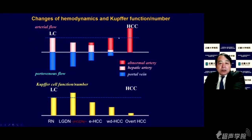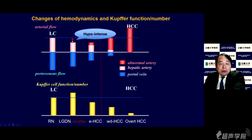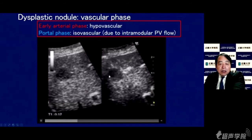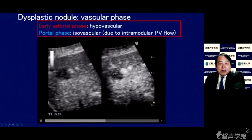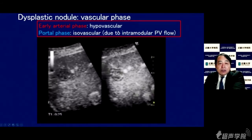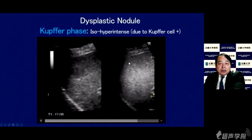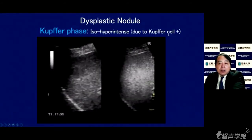For a dysplastic nodule: B-mode shows a hypoechoic region with changes in hemodynamics and Kupffer function in cirrhotic liver. The dysplastic nodule or early HCC shows decreased arterial flow, appearing hyperintense on arterial phase, and hyperintense on Kupffer phase because there are Kupffer cells inside the nodule. A regenerative nodule shows no arterial flow in the arterial phase; however, in the portal phase, portal flow is visible — so early arterial phase hypervascular but portal phase isovascular due to intranodular portal venous flow — and Kupffer uptake in the Kupffer phase because Kupffer cells are inside the nodule.